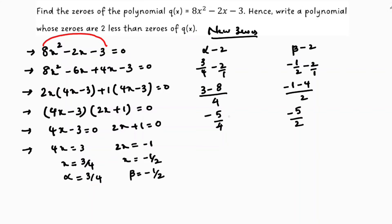So these are the new zeros: minus 5 by 4, minus 5 by 2. Now I need to find a polynomial. So the formula is k into x² minus (alpha plus beta) into x plus alpha beta. These are the new alpha and beta values. So we will substitute in this.